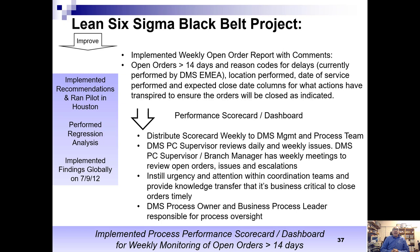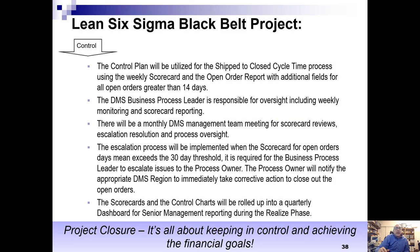Business leaders were made responsible for process oversight. For the control phase, we utilized the weekly scorecard for management review. We gave a handoff to the business process leader to assume control and be responsible for daily, weekly, and monthly oversight and reporting to management and the leadership team. We developed an escalation process with defined roles, responsibilities, and corrective action to be taken immediately if issues occur. With project closure, it's all about keeping our process under control and achieving the financial goals.